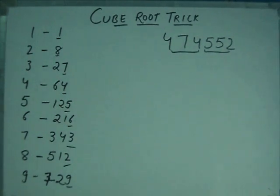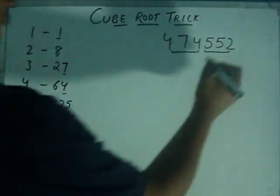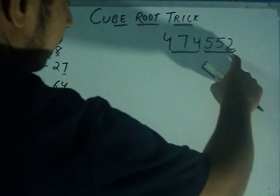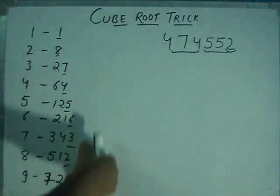Suppose we have a five digit number or four digit number. In that case also, the last three digits of the number is in our first part. So what we have to do then, here the last digit is 2. Check this digit in this series.